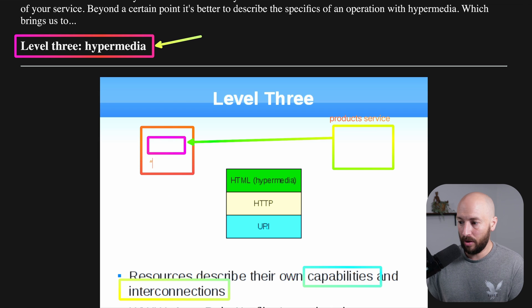So basically, supporting HATEOAS, where we would have some property called, for example, links. And in this property, it will describe that you can also go ahead and fetch that resource using this HTTP method, etc.